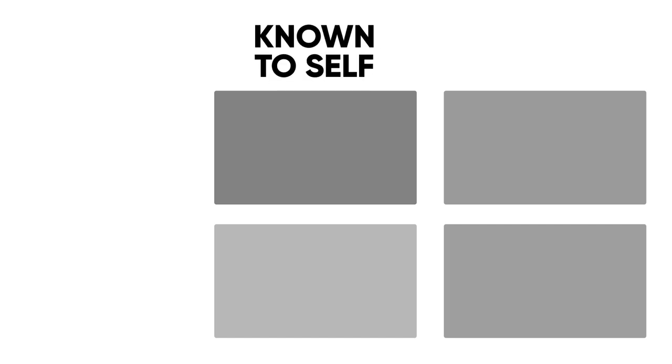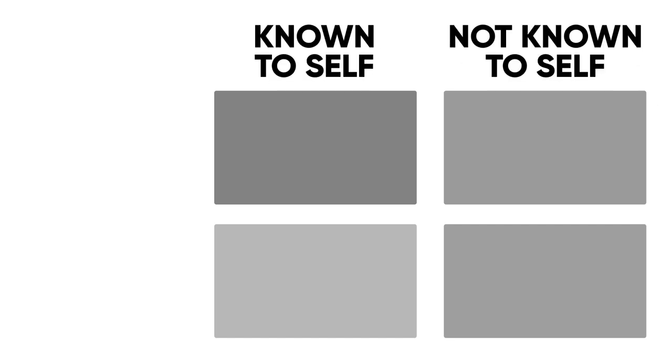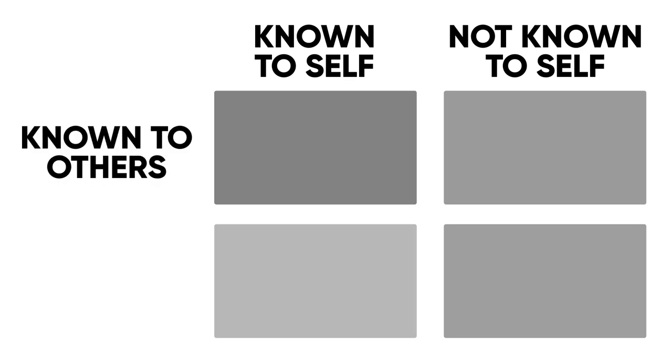The Johari window is like a window. It has four panes. The size of these four panes change based on your understanding of different areas of your life. Across these four panes, you will find areas which are known to you and unknown to you, and areas that are known to other people and unknown to other people. The reason we use others' understanding is because it helps us realize and discover more about ourselves.